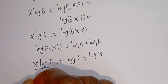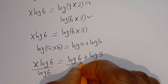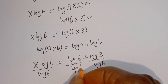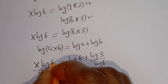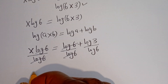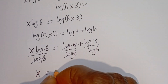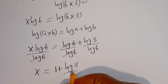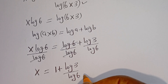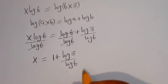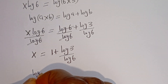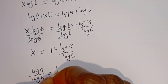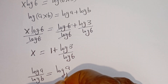Let's divide both sides of this equation by log 6. The log 6 terms cancel, giving us x equals 1 plus log 3 divided by log 6. Using the change of base rule, log a over log b equals log a base b, so x equals 1 plus log 3 base 6.